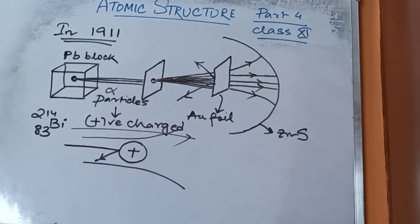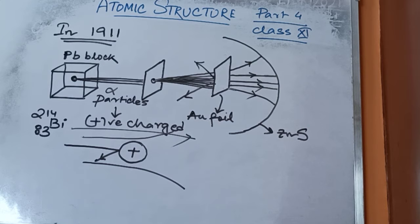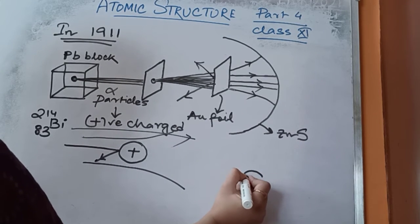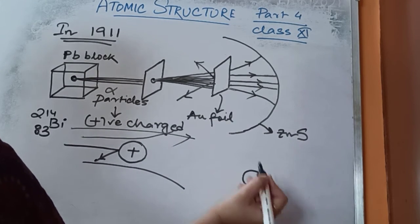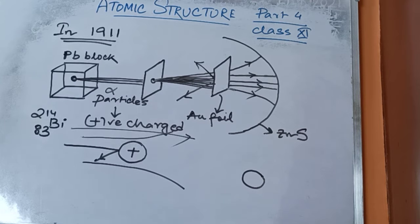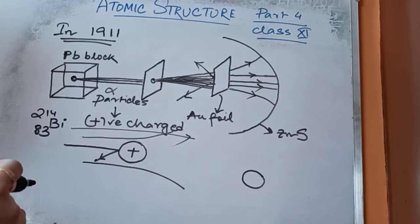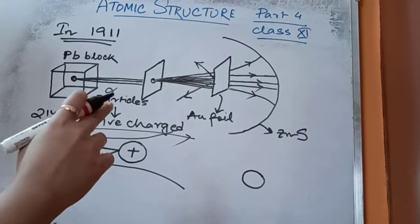From these conclusions, he made his atomic model. He said that atoms contain a positively charged body at the center, which is known as the nucleus. He also said that the size of this nucleus is extremely small compared to the atom. That is why maximum of the atom is free space and maximum alpha particles pass undeflected.